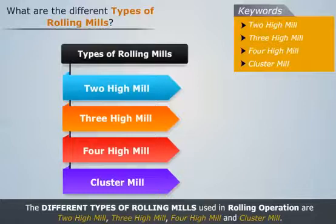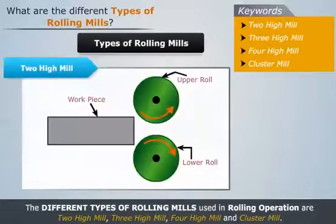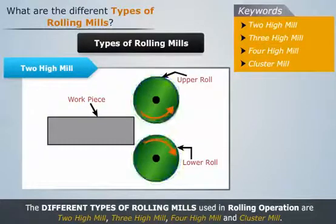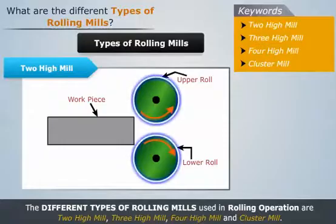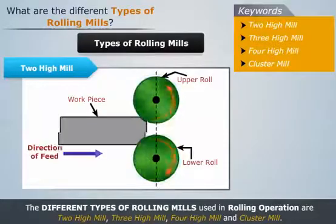Let's first study about the 2 high mill. It consists of two identical horizontal rolls, placed exactly over one another and rotating in opposite directions.